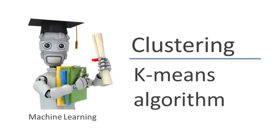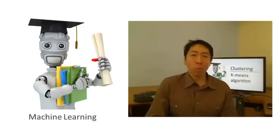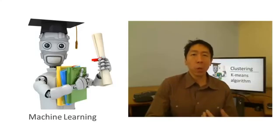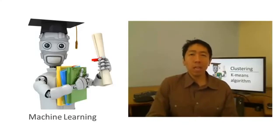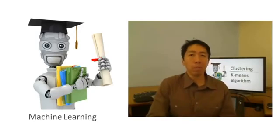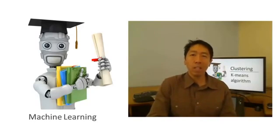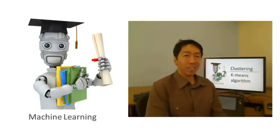In the clustering problem, we are given an unlabeled data set and we would like to have an algorithm automatically group the data into coherent subsets or into coherent clusters for us. The k-means algorithm is by far the most popular and most widely used clustering algorithm. In this video, I'd like to tell you what the k-means algorithm is and how it works.